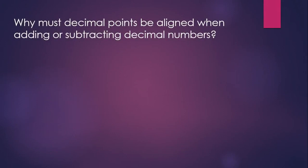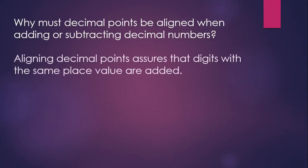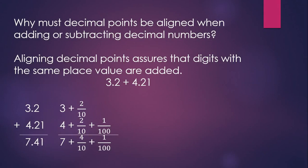Why must decimal points be aligned when adding or subtracting decimal numbers? Well, the explanation has to do with place value. If we align the decimal points in the numbers we're adding or subtracting, that assures that the digits with the same place value are going to be added. If you think about this as an example, if we try to add 3 and 2 tenths and 4 and 21 hundredths, we're really looking at numbers that have a whole number part and tenths, and in the case of the second number, a hundredth as well. Now, when we're adding fractions, we know we can only add fractions with like denominators. So to make sure that we're adding the tenths in the first number to the tenths in the second number, we're going to have to align the decimals so that we are adding fractions with the same denominator. In other words, we're adding decimals that have the same place value.